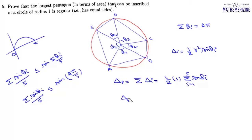So from here we can say this delta p which is equal to one upon two summation sine theta i will always be less than or equal to one by two and then summation sine theta i will be five into sine two pi by five. That is summation delta p is less than or equal to five by two sine two pi by five.